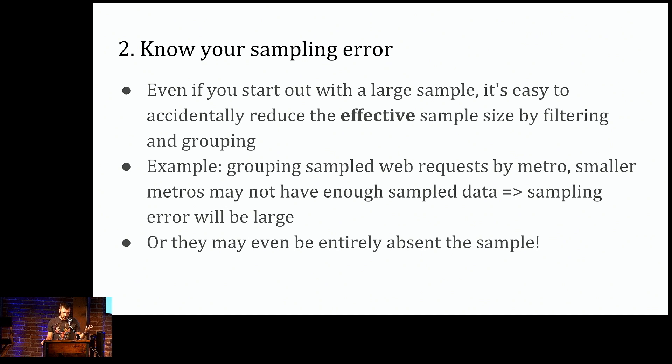So our systems should always return confidence intervals and error bounds whenever they aggregate over samples. For common SQL aggregates, like average count and approximate quantiles, the error decreases with the square root of the sample size. But even if you have a big enough sample, you can easily shoot yourself in the foot by accidentally reducing the size of the sample that goes into the aggregate function by grouping and filtering it away.